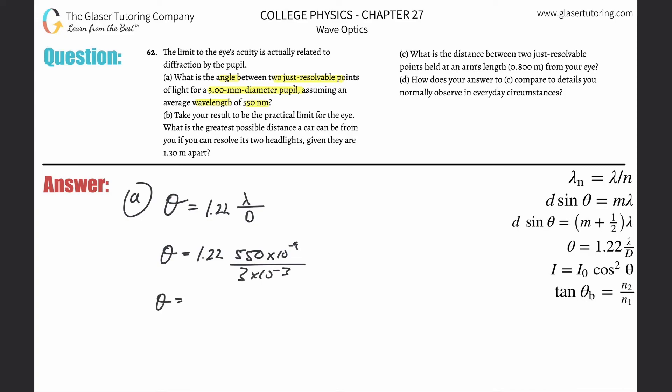And then all you need to do is take out the calculator and plug it in. So it's just 1.22 times 550 times 10 to the minus ninth divided by 3 times 10 to the minus third. And we get a value of about 2.24 times 10 to the minus fourth. And this is in terms of radians. So that takes care of letter A. That's the angle.